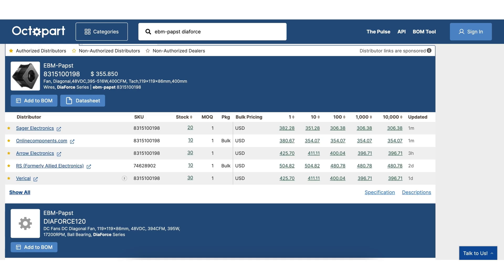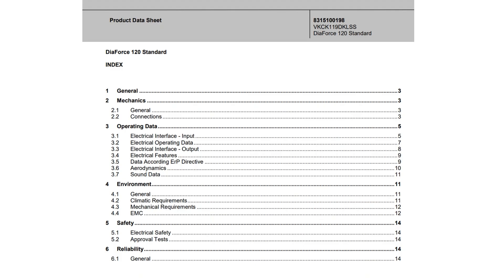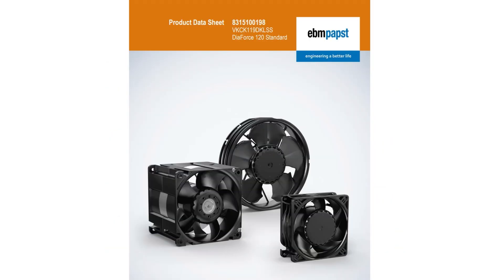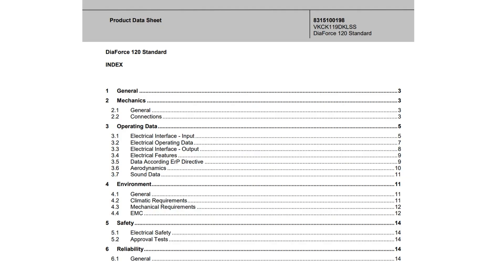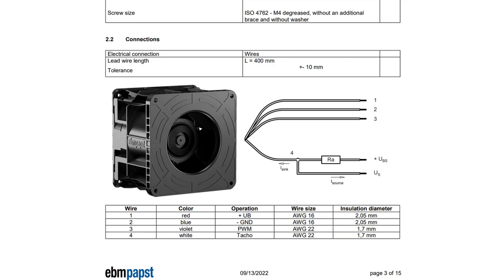Jumping to the EBM Pabst Diaforce data sheet, which is a more complicated and involved part, you're going to get more information. This one actually has a table of contents, and even a splash page. You can see there is definitely a different way of presenting the information, but a lot of the similarities are still there — you can see some of the basic connection information and the wire sizes of the parts.